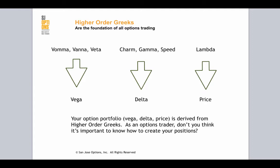A similar thing is happening with your delta. As you go through time, your higher order Greek — the Charm — is shaping your delta tick by tick. So obviously it's important to understand how to use Charm when it can dictate what your delta is going to change to by the second.